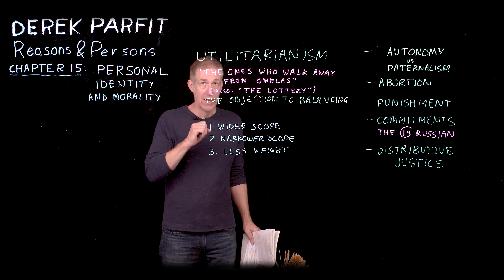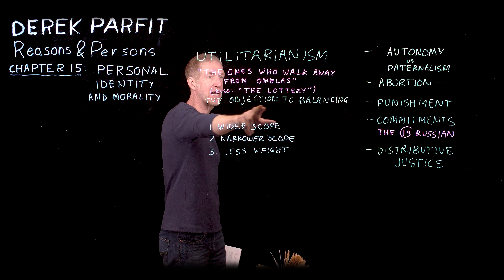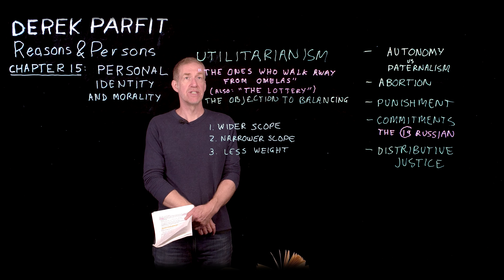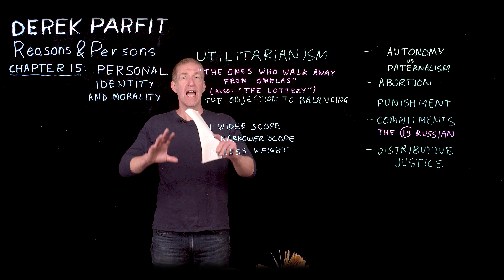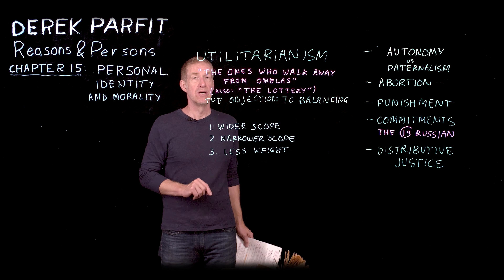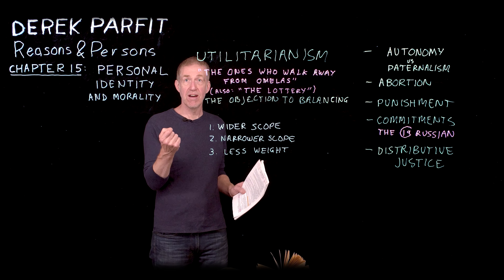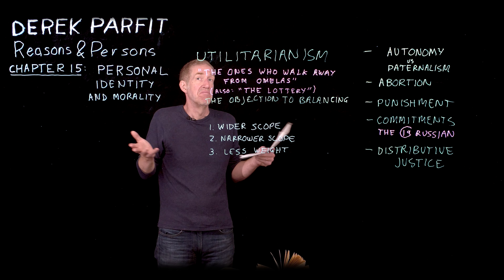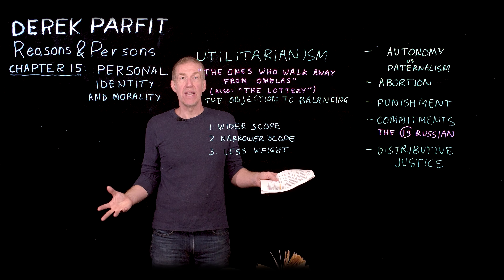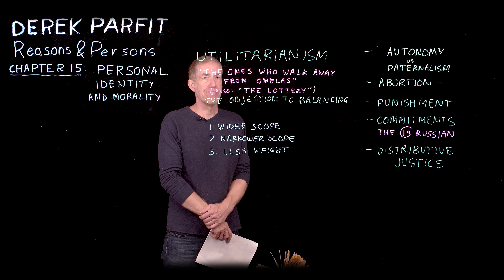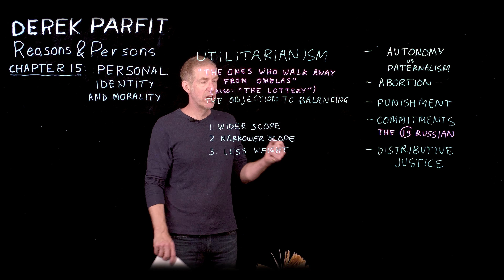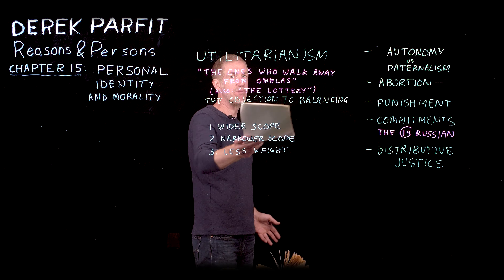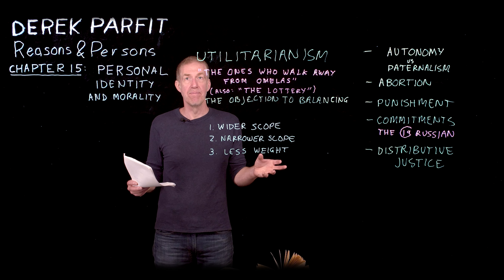This is supposed to illustrate what utilitarianism implies: that if you live in Omelas, you should be entirely in favor of torturing this small child to death, because it's just one small child and the benefits vastly outweigh the suffering — everybody else is living a great life. But every once in a while somebody finds out about the small child and says, 'I can't — I love living here but it's not worth it. I cannot live with the guilt.' And they walk away. That's the criticism of utilitarianism.